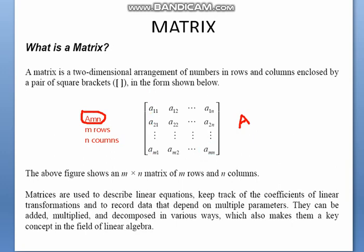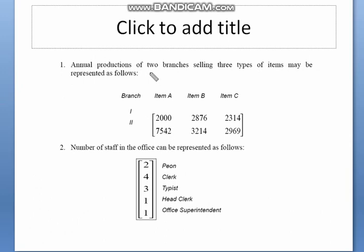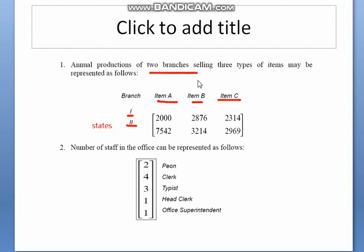We use matrices for so many economic and mathematical applications in everyday life. For example, suppose there is a firm selling three different types of products in two different branches. Taking Maruti company as an example — they are selling three different types of items in two different states: state 1 and state 2.